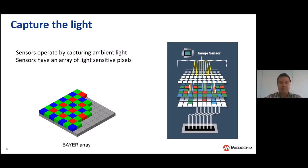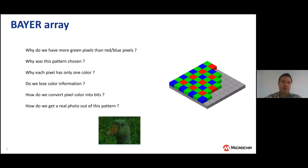This array inside the sensor is called the Bayer array, depicted on the left side of the slide. We can see how the pixels are arranged — blue, green, and red. If we look at the Bayer array, we notice that we actually have more green pixels than red or blue. The answer to why is that the human eye is much more sensitive to green light rather than blue or red light, so the Bayer array captures more information from green light.